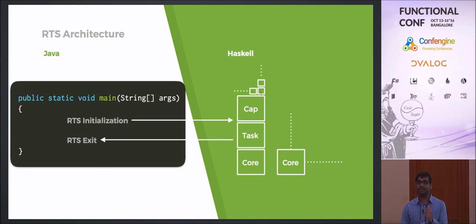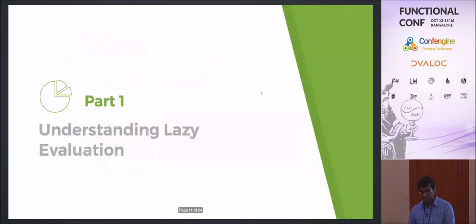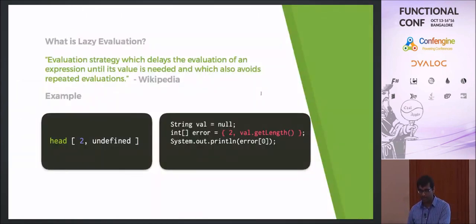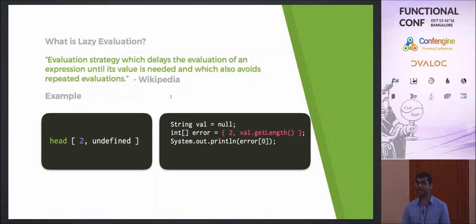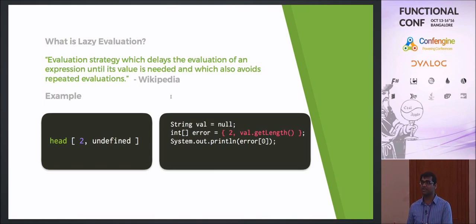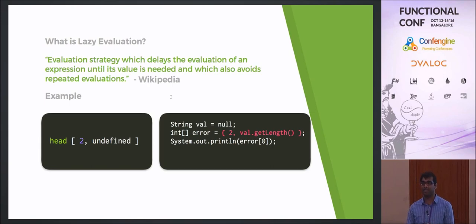I'll be discussing one type of frame today: the update frame. This is the frame that takes care of the lazy evaluation property of avoiding repeated evaluations. We need to override the thunk with the value it evaluated to — that way, if the thunk is used in multiple locations, you just use the evaluated value rather than evaluating it again.